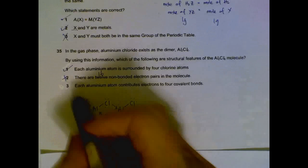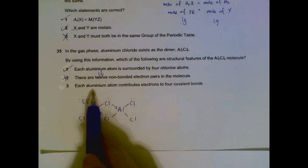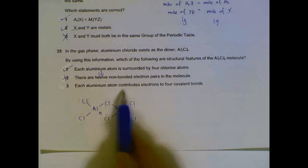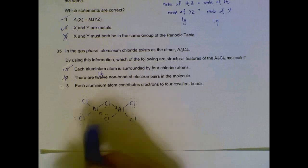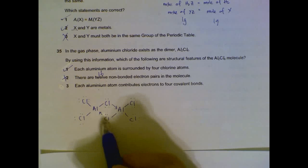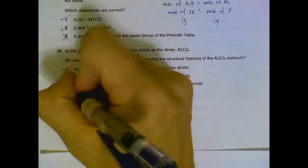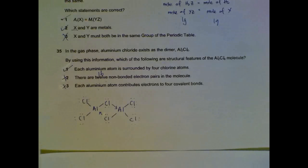Statement 3 must be wrong because number 2 is wrong. But we will see, aluminum contributes electrons to 4 covalent bonds. It contributes to 3. This one is a dative bond, so not considered contributed by aluminum.